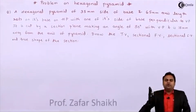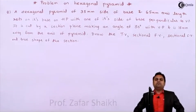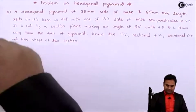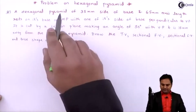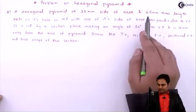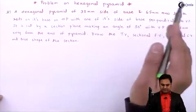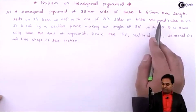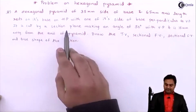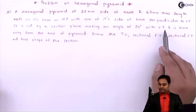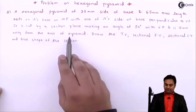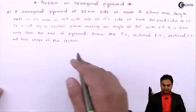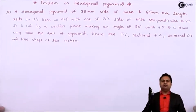Hello friends, in this video we are going to see a problem on a hexagonal pyramid. Here is the question: a hexagonal pyramid of 35 mm side of base and 65 mm axis length rests on its base on HP, with one of its sides of base perpendicular to VP. It is cut by a section plane making an angle of 30 degrees with VP and is 15 mm away from the axis of pyramid. Draw the top view, sectional front view, sectional side view, and true shape of the section.